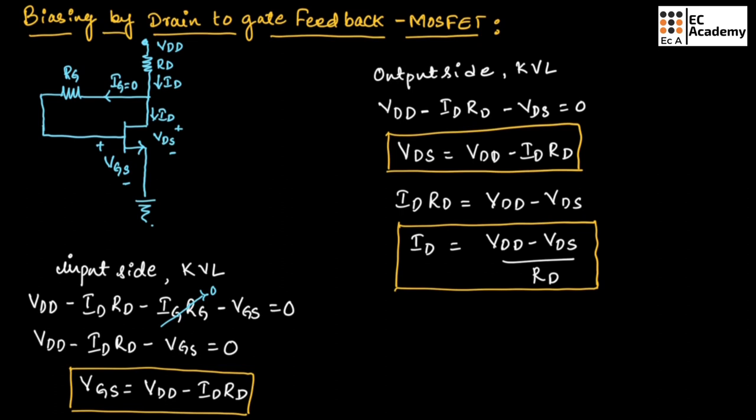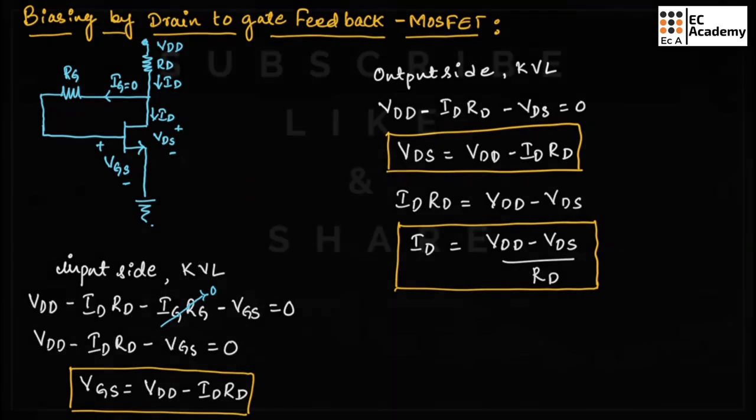This is about biasing by drain-to-gate feedback using MOSFET. Hope you have understood the topic. Thank you.